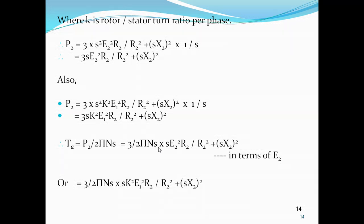Substituting, the torque in terms of E2 and K is: Tg = (3 / 2πNS) × S·K²·E2²·R2 / (R2² + (S·X2)²). Note this torque equation for both standstill and running conditions.